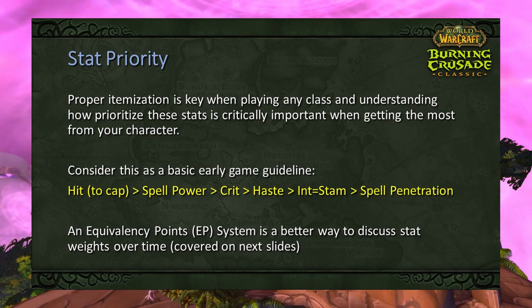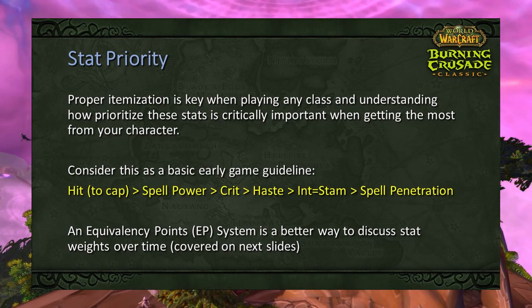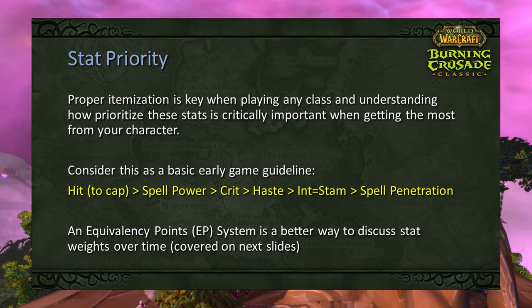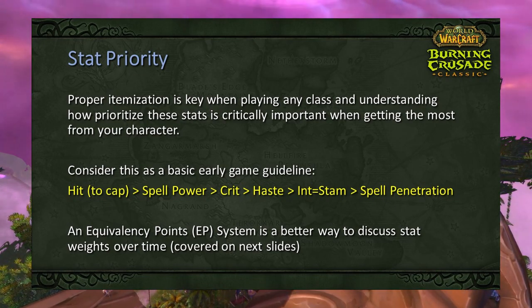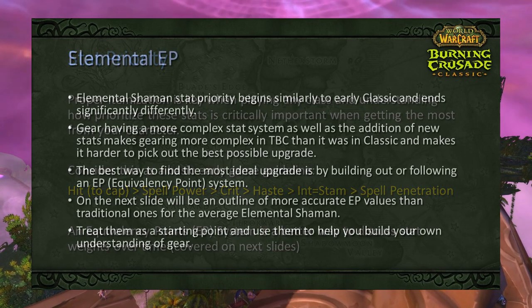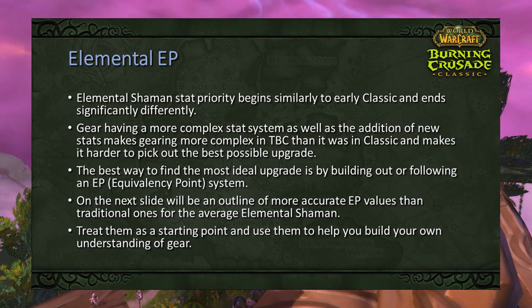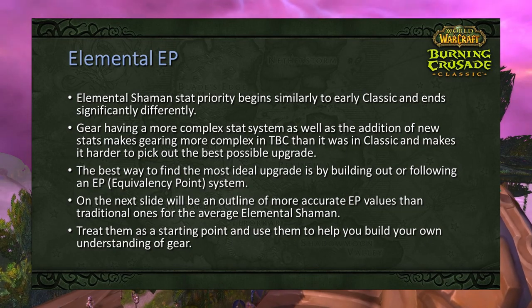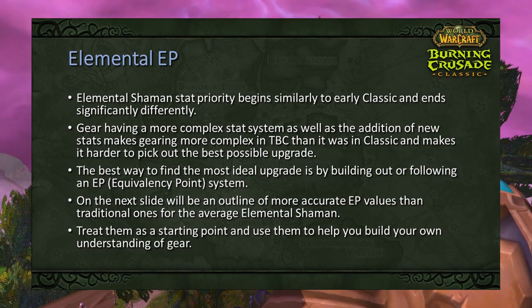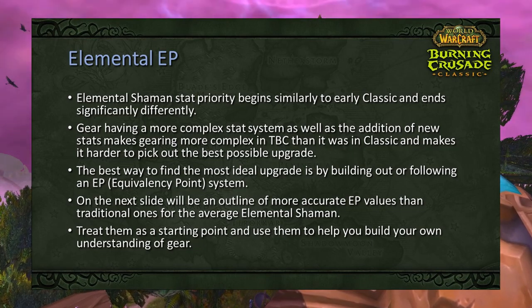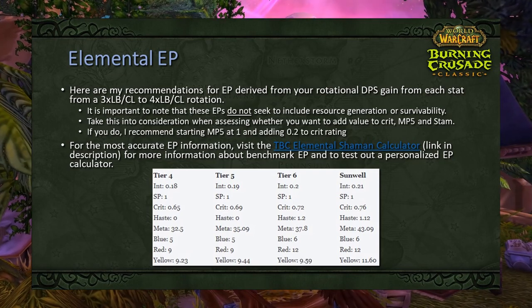Now that we understand our basic stats, we can move on to stat priority. Proper itemization is key — consider this basic early-game guidance: hit to cap → spell power → crit → haste → intellect = stamina → spell pen. An equivalency point (EP) system is a better way to discuss stat weights over time and will be covered in the next slide and in the shaman calculator. Elemental shaman stat priority begins similar to early Classic but ends significantly differently as gear becomes more complex with new stats like haste.